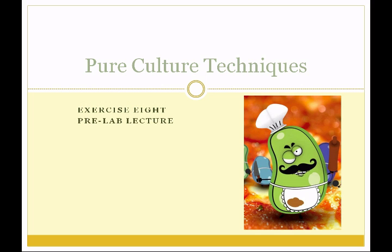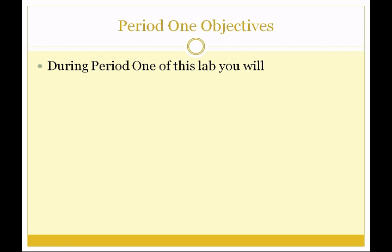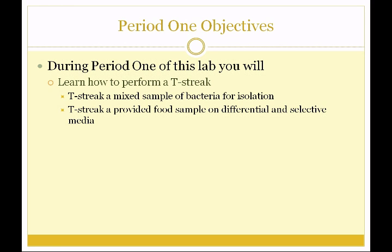In exercise eight you'll be learning pure culture techniques. We're going to examine some of the organisms that routinely contaminate our food. During period one of the lab you will learn how to perform a T-streak. You'll T-streak a mixed sample of bacteria for isolation. In that sample will be Escherichia coli and Staphylococcus epidermidis, and you will successfully separate them from one another. You'll also T-streak a provided food sample on differential and selective media in order to determine what presumptive microorganisms might be in that food sample.